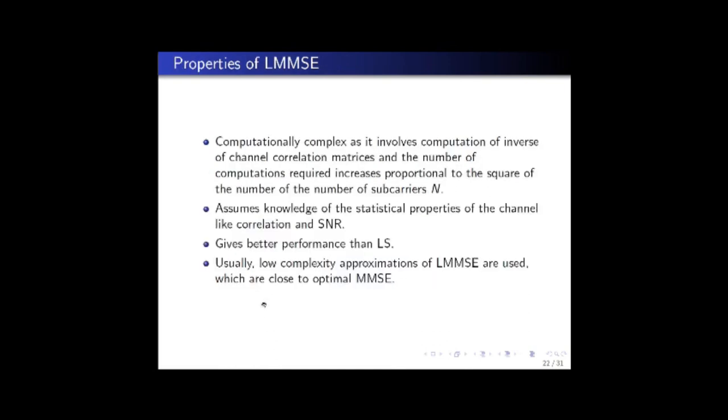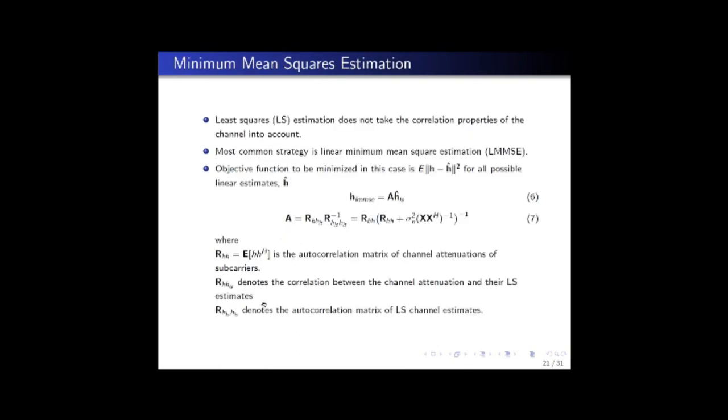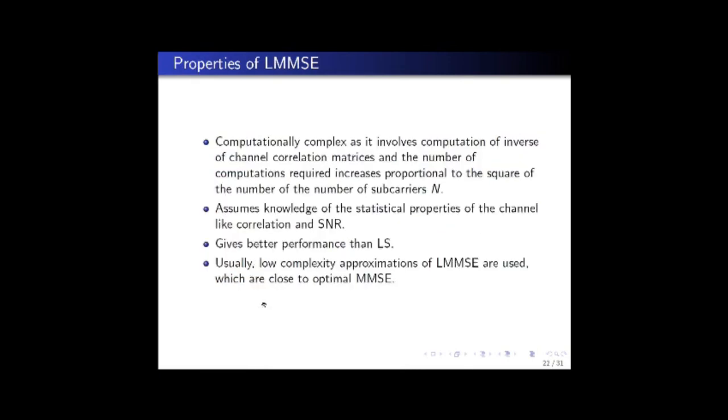As can be observed from the previous slide, computation of the minimum mean square estimate is not that simple because it involves the computation of the inverse of channel correlation matrices, which increases in proportion to the number of subcarriers used, N. The other assumption here in LMMSE is that the statistical properties of the channel is assumed to be known, which basically gives you the correlation matrix. But it gives a better performance compared to least squares, though it is of little practical value because of the computational complexity involved.